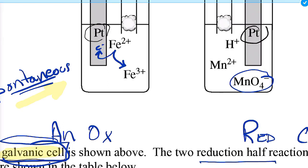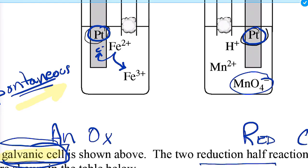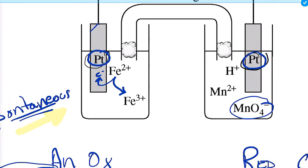You might ask why platinum isn't involved. Platinum is a noble metal — like gold, it doesn't react. We love to use platinum electrodes when the electrode metals aren't part of the oxidation-reduction reaction itself. Remember, electrodes are metals where the redox occurs; it doesn't always mean they participate in the reaction. In this case, platinum is like the carbon or graphite electrodes we've used — pretty unreactive.